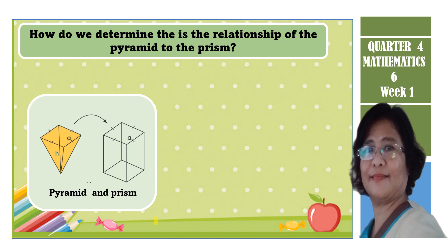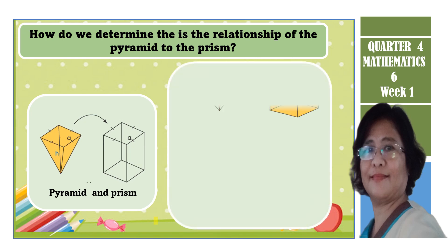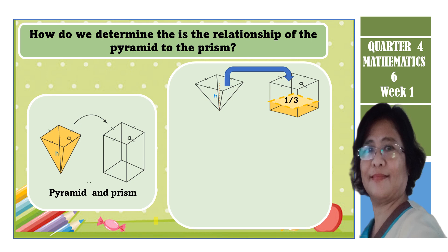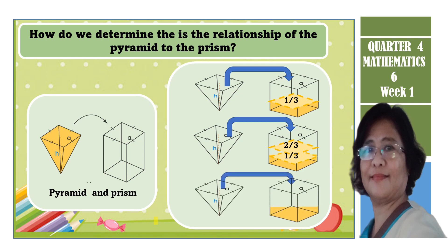Let us watch and observe the illustration. The first pyramid has been transferred to the rectangular prism — you notice it takes only one-third full. The second pyramid is also filled in, making it two-thirds full. The third pyramid transferred makes it completely full. Therefore, the relationship of the volume of the pyramid to the volume of the rectangular prism is that the pyramid is just one-third of the rectangular prism.